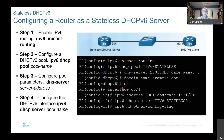Then configure the pool parameters including the DNS server and whatever that server address is, and any other things you want to put in there like domain name. And then configure the flag — here they are configuring the other flag — IPv6 nd other-config-flag.